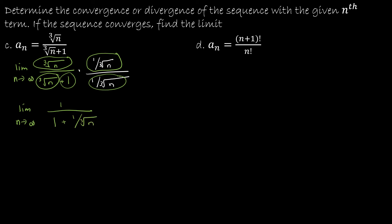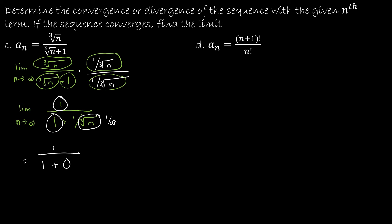Now you might be saying hold up, because that's not helpful — I have a fraction within a fraction, and we know that's a big no-no. However, I'm just trying to find the limit. This guy is 1, this guy is 1, and 1 over the cubed root of n — as n gets bigger and bigger, this is really like 1 over infinity. When I take 1 divided by an increasingly large number, I get 0. So my limit is 1 over 1, or just 1, which means this converges, and the limit is 1.